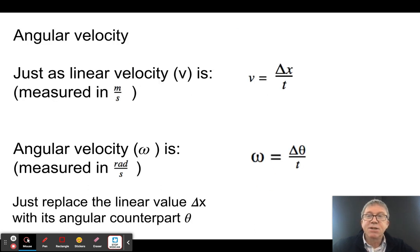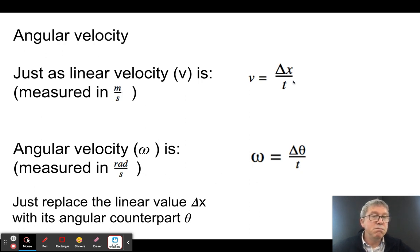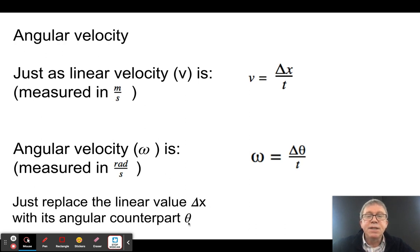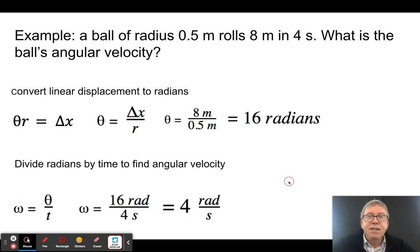Just like linear velocity — translational velocity is measured in meters per second, and velocity equals delta x over t — angular velocity, which we use the Greek symbol omega for (it looks like a fat W), is measured in radians per second. Angular velocity is your angular displacement in radians divided by time. So I just replaced delta x with theta — meters per second becomes radians per second. It's as easy as that.